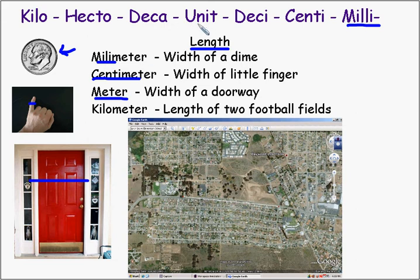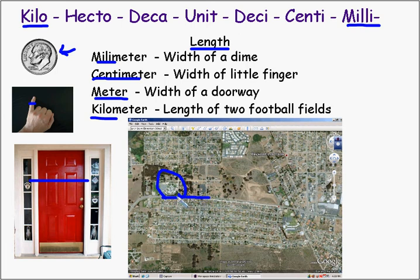And finally, moving in this direction, a kilometer means a thousand meters — taking this doorway and lining it up a thousand times. Here's Monarch Grove right here, and this street is Doris Street. If you traveled down Los Osos Valley Road from Doris Street to Palisade Street, that would be about one kilometer.